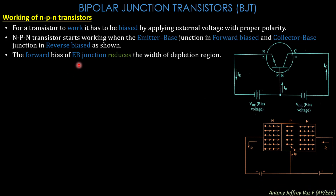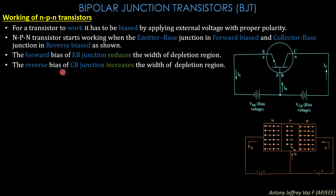The forward bias of the emitter-base junction reduces the width of the depletion region. The reverse bias of the collector-base junction increases the width of the depletion region. The N-type material acts as emitter, the P-type as base, and the second N-type as collector.